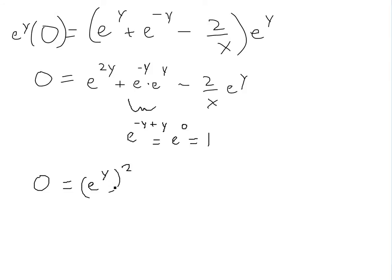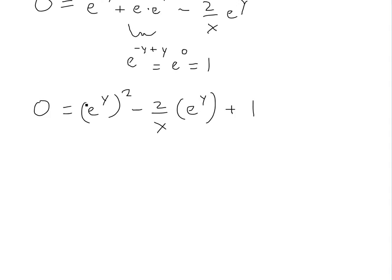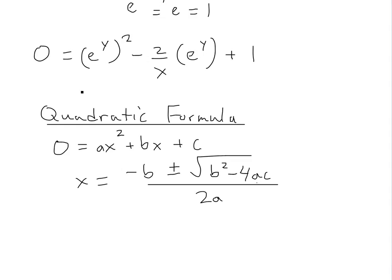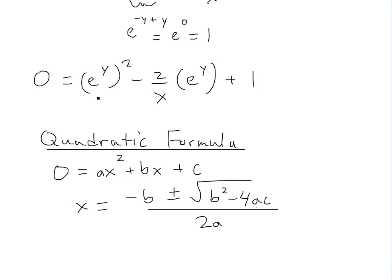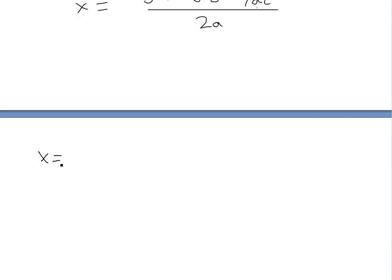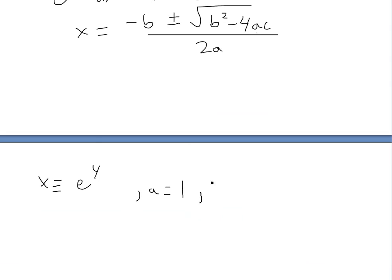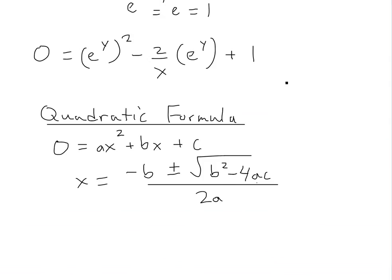This looks like a quadratic function. For a quadratic 0 equals a·x² + b·x + c, you solve using the quadratic formula: x equals negative b plus or minus square root of b² minus 4ac, all divided by 2a. See proof of this in the video links below. In our case, the variable is e to the y instead of x, where a equals 1, b equals negative 2 divided by x, and c equals 1.